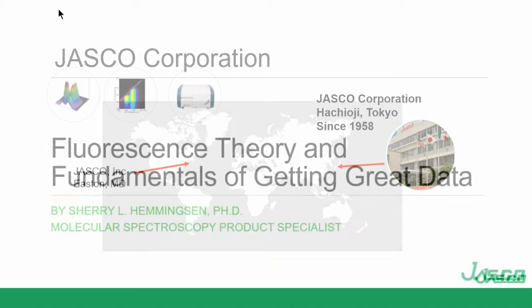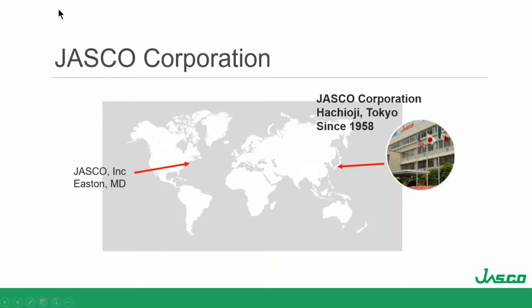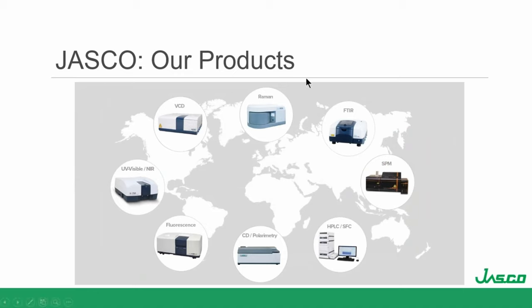First, I think it'll be beneficial to just take a quick look at JASCO Corporation, the Japanese Spectroscopy Company. JASCO started back in 1958 with a Nobel Laureate Infrared Spectroscopist and is located in Hachioji, Tokyo. Our North American and South American offices are here in Easton, Maryland, and JASCO has been producing exceptional spectroscopic and chromatographic instrumentation — a full range of instruments.